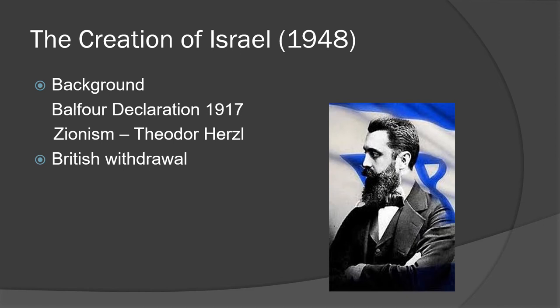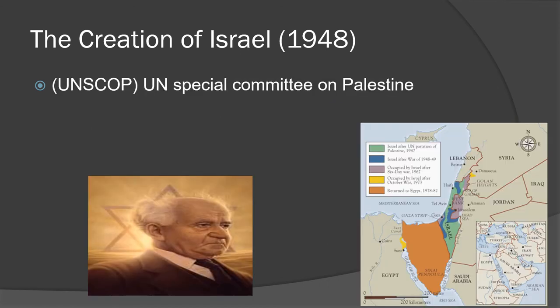However, when the British ended their mandate of Palestine, they gave this problem to the United Nations. The United Nations recommended a two-state solution: an Arab state, a Jewish state, and an international zone around Jerusalem. The Jews accepted the deal, but the Arabs did not. They believed that getting only 15% of the land when they owned 80% was unfair.